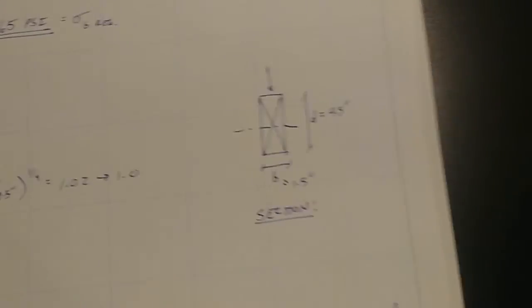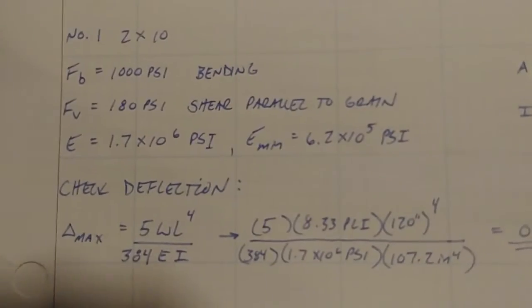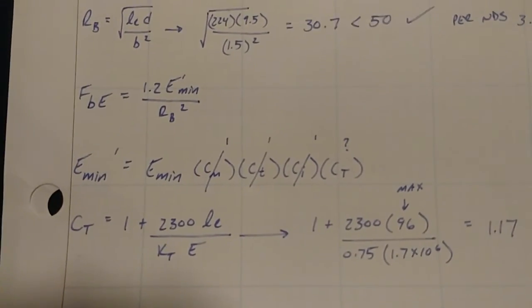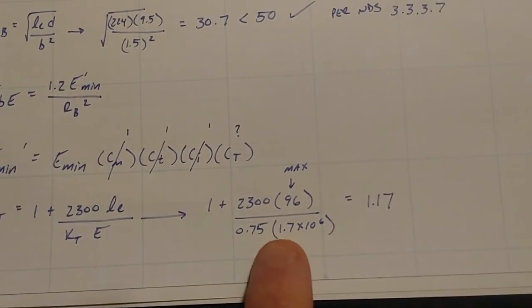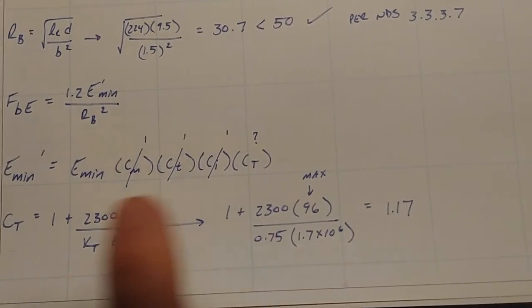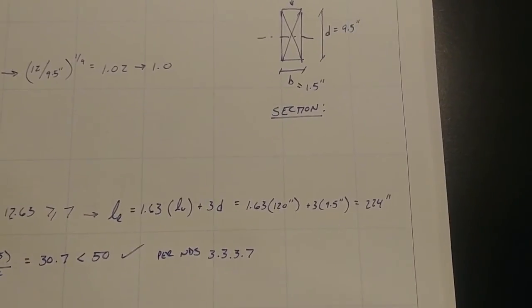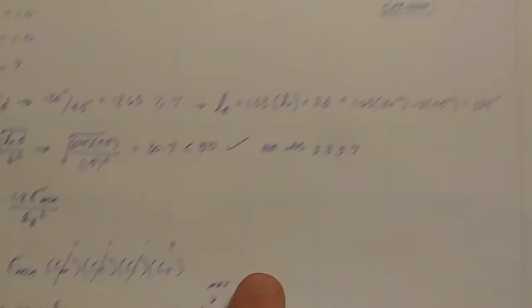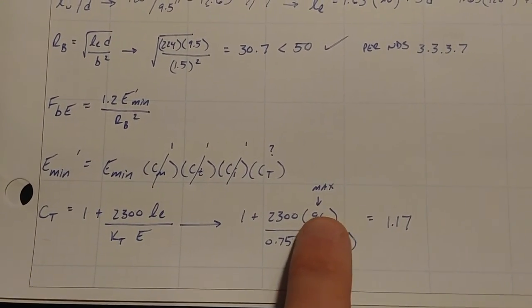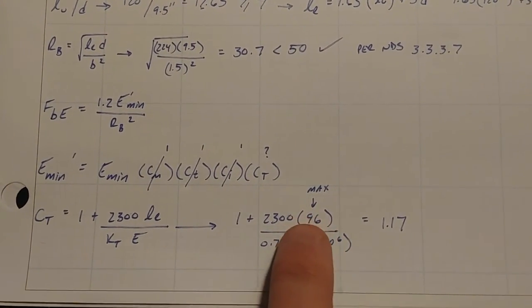And we wrote that down previously. Which is E is 1.7 times 10 to the 6th PSI. So we run through, plug all this in. Now, LE we had as 224 inches. But in the manual, in the NDS, it says,